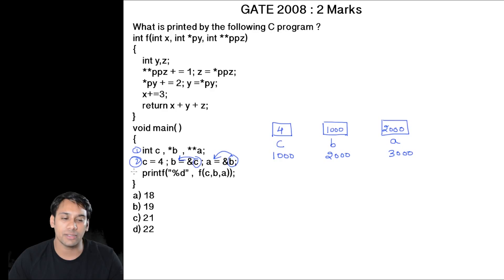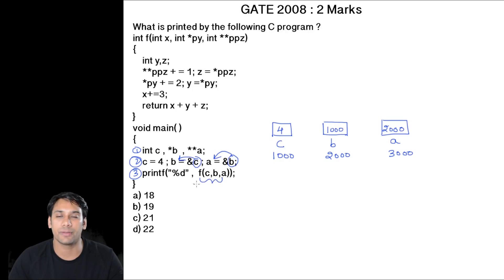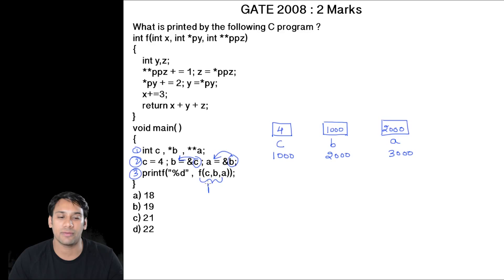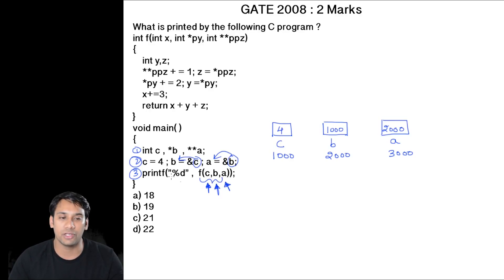Now in line number 3, we are calling a printf statement. In this printf statement, we are calling a function and whatever value is returned by the function will be printed by this printf statement. The parameters being passed are: the value stored at variable c, the value stored at pointer b, and the value stored at pointer a.